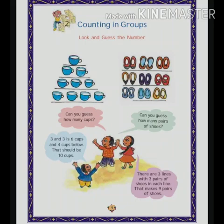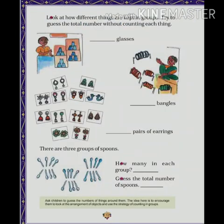The same way you can see here the number of glasses. You can count — there are 3 glasses in each group: 1, 2, 3, 4, 5, 6, 7, 8, 9, 10, 11 and 12. So in all there are 12 glasses in the 4 groups.